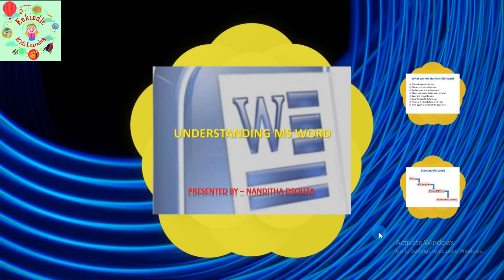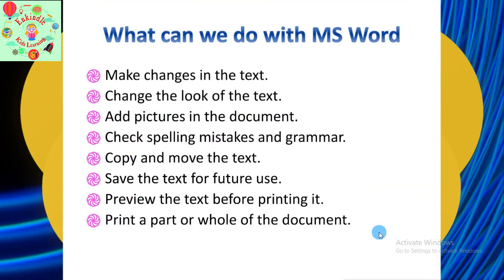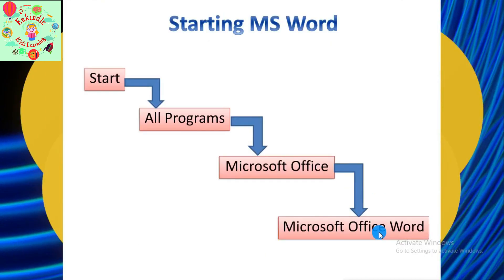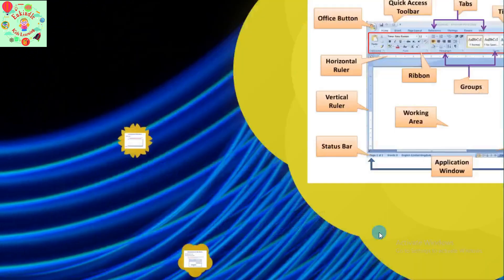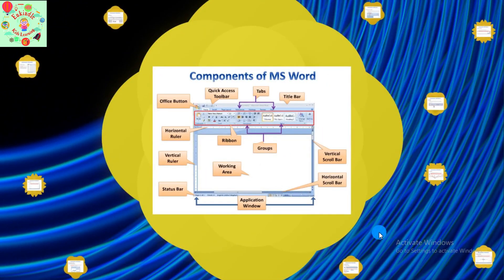Let's take a quick recap. First, we studied what we can do with MS Word: change the text, change the look of the text, add pictures, check spelling mistakes and grammar, copy and move the text, save the text for future use, preview the text before printing, and print a part or the whole document. Then we saw how to start MS Word: click the Start button, then All Programs, then Microsoft Office, then Microsoft Office Word.